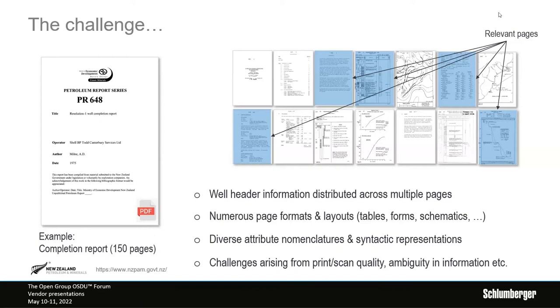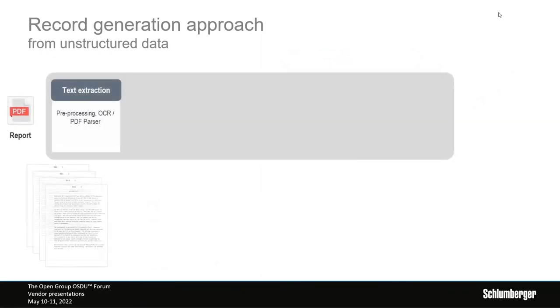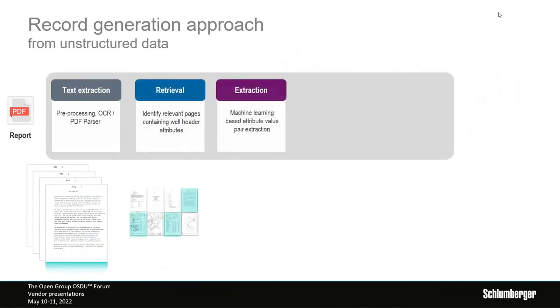We have to analyze the relevance of attribute-value pairs found throughout the document in order to recreate these records in the OSDU data platform. There are different formats — tables, forms, schematics — and different nomenclature. So we need to apply natural language processing to accommodate the understanding of what is mentioned in these documents. We took a basic approach: extracting text using the power of OCR technology, then applying three or four big processing blocks.